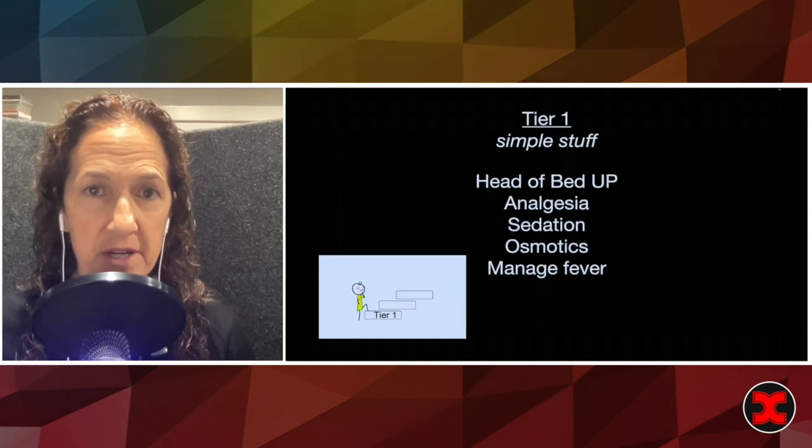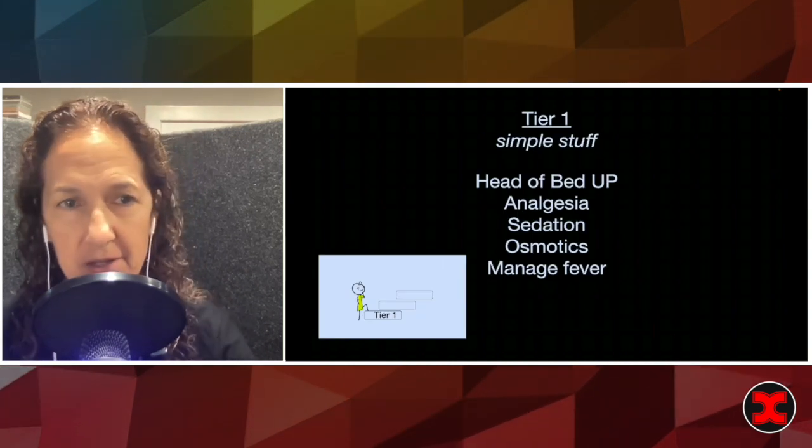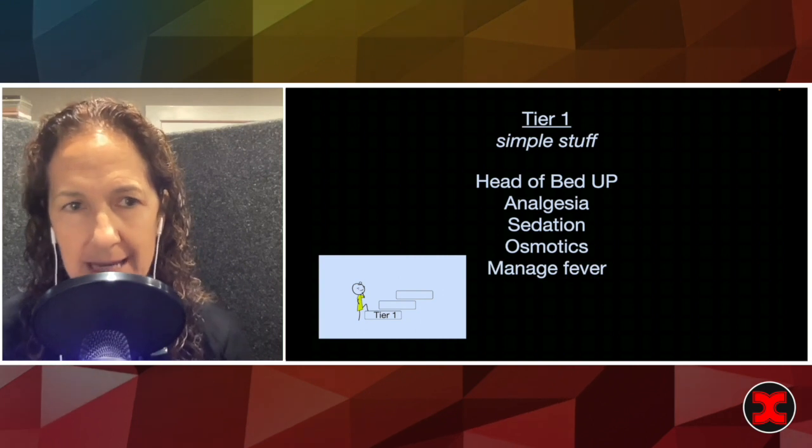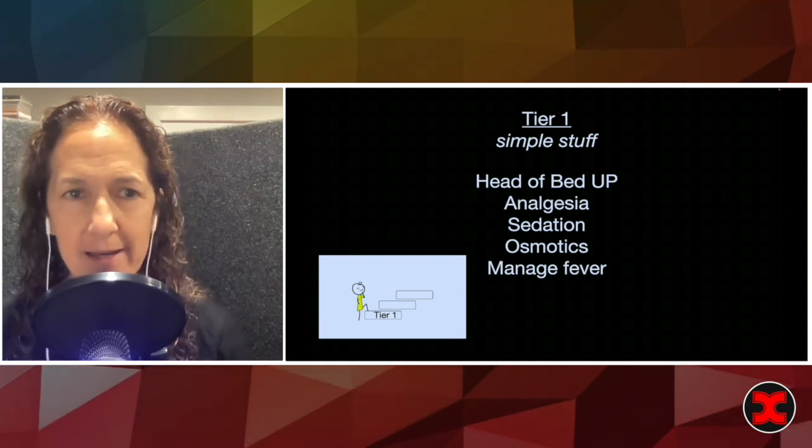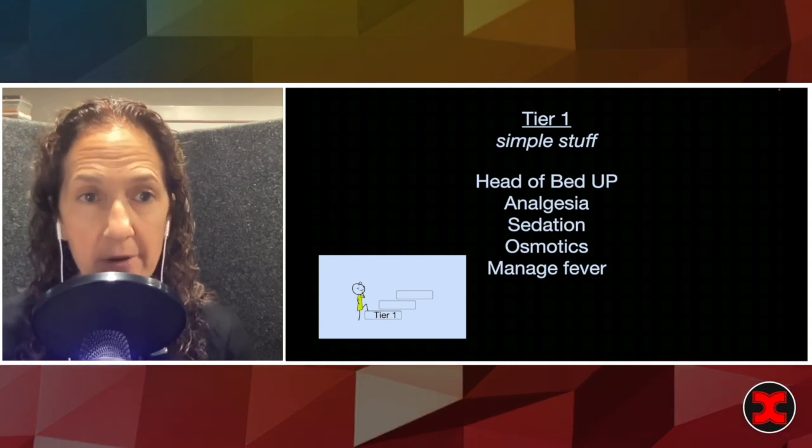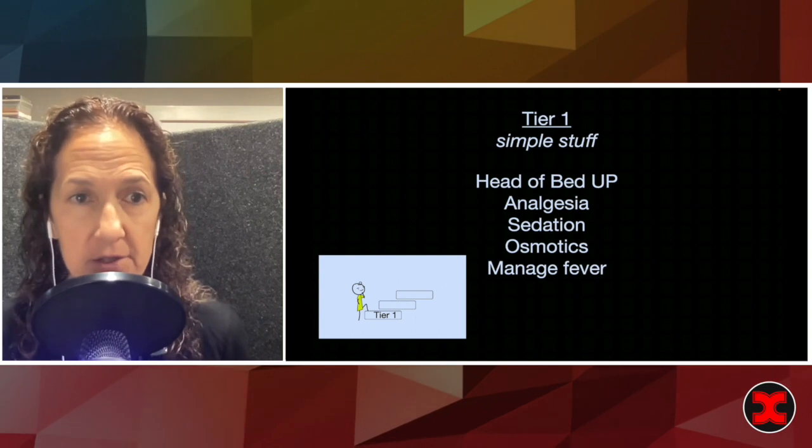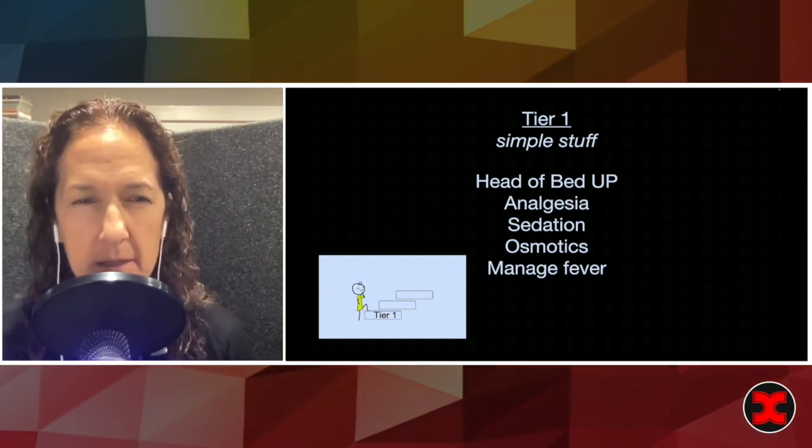So let's start with the first tier. It's the simple step. When you walk in a room and the patient you know has a CNS problem, get the head of the bed up unless there's some compelling reason not to. You're allowing blood flow to egress from that skull by the jugular system and buying space.